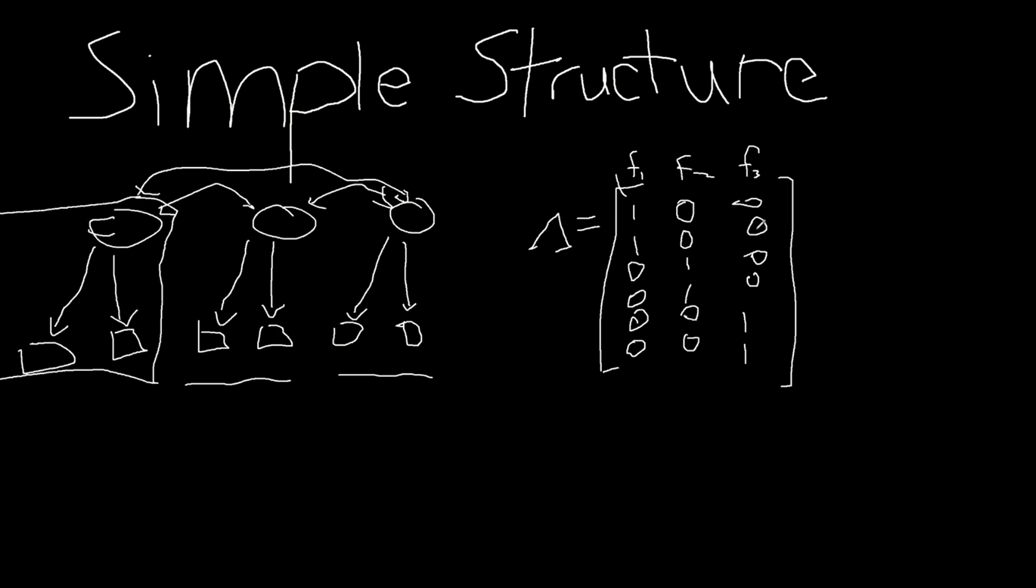Sometimes there's non-zero values, and most of the time there's non-zero values. So being able to make determinations of, well, is that simple? And what happens when there's not simple structure? And I think that's really important...